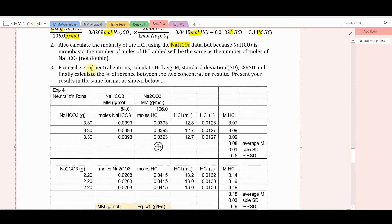For each set of neutralizations, calculate the average molarity and the standard deviation of your values and the relative standard deviation. Then finally calculate the percent difference between the two concentration values, the two average concentration values, the one you determine with sodium carbonate compared to the one you determine with sodium bicarbonate.